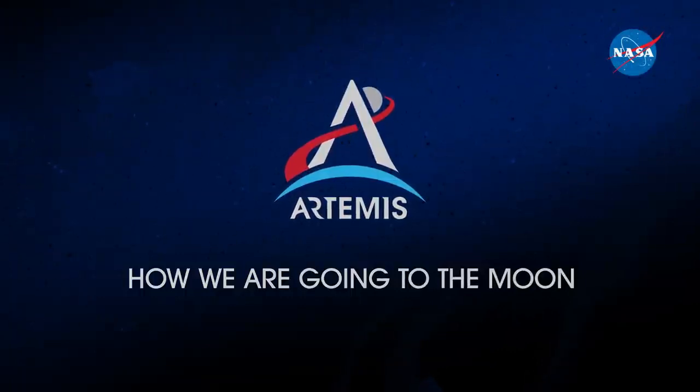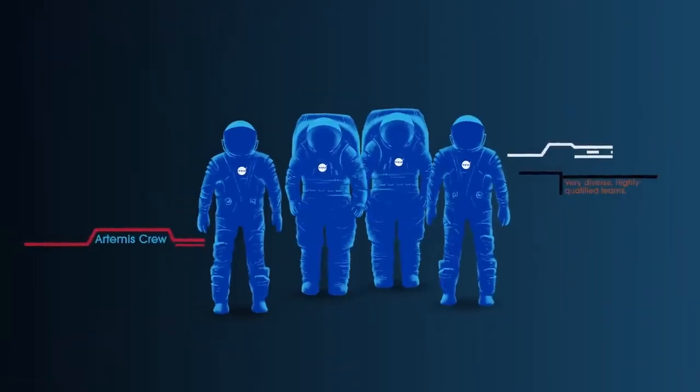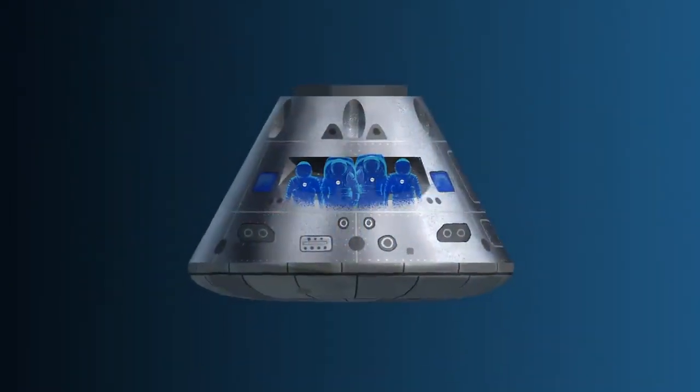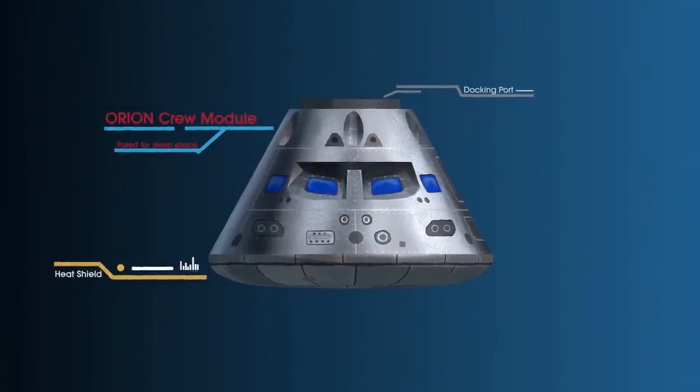Everything is designed and tested with our most important element in mind, the astronauts. This is their deep-space, human-rated spacecraft called Orion, built in three parts.